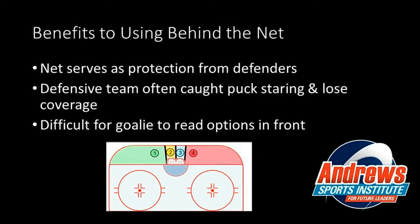Number two is that defensive players are often caught puck-staring and lose their coverage in front of the net. If I'm standing behind the net where I just drew the X, the defensive players' eyes are all now pointing back towards their own net — towards you with the puck behind. What happens is they end up losing sight lines and losing players who may be behind them finding open ice.